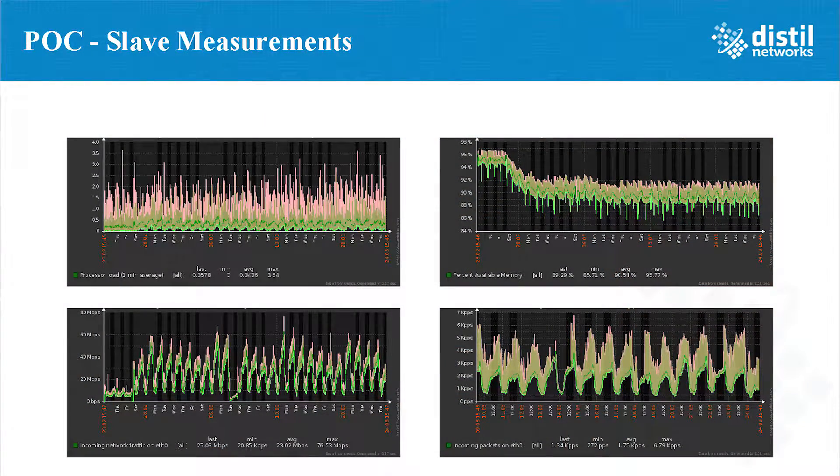We chose C3.8XL instances, which are pretty beefy CPU-optimized machines — 32 virtual CPU cores, 60 gigs of RAM, and enhanced networking. We decided to start with a proof of concept: onboard a small percentage of their traffic, take measurements, and extrapolate out what full traffic load would look like at the time, as well as up to the 3x seasonal peak, to figure out if this topology would handle full load.